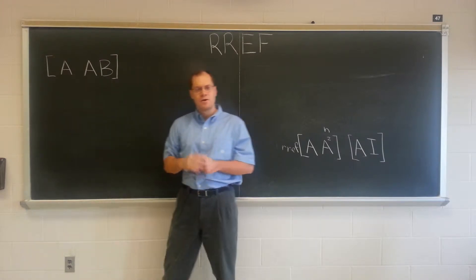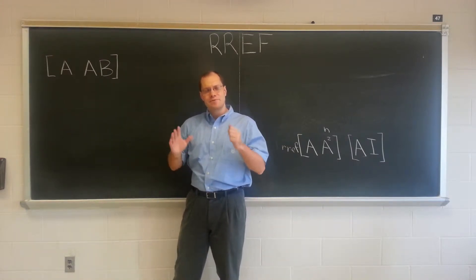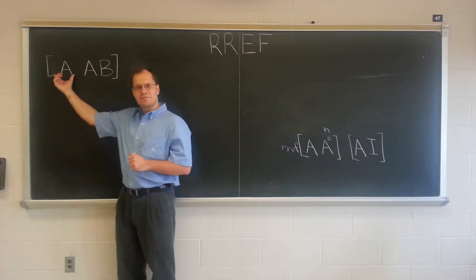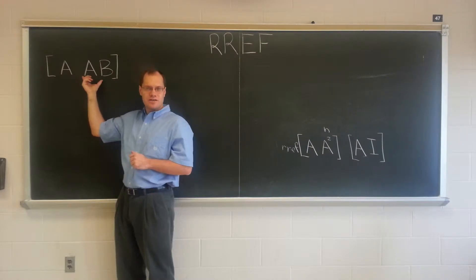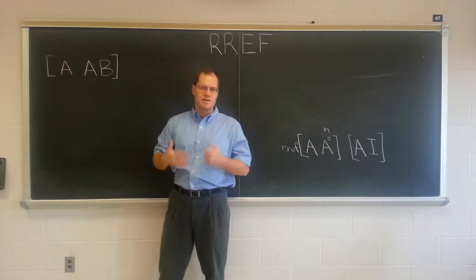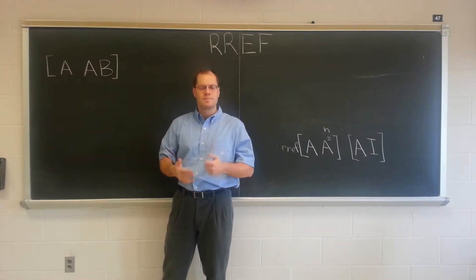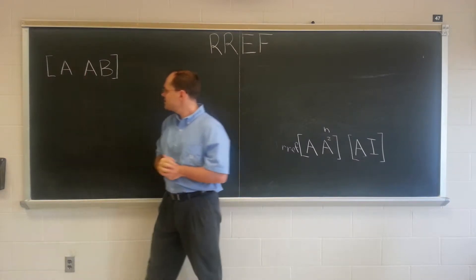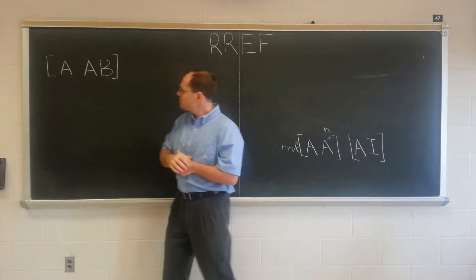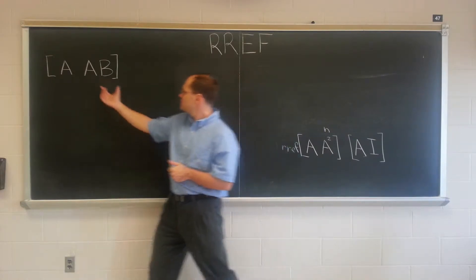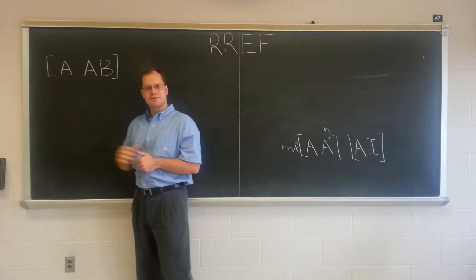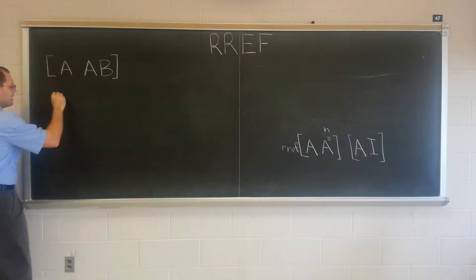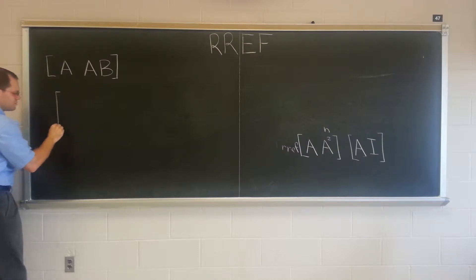But what will those non-pivot columns be? They'll have the exact same relationships to the pivot columns as they do in the original matrix. The relationships among the columns are preserved by Gaussian elimination. So it will have to be the same relationship as exhibited now. But what is the relationship between these columns and the columns of A? Let's remember what it means to multiply two matrices. There are several perspectives on matrix multiplication.